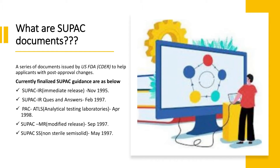These changes were categorized for different product types. The finalized SUPAC guidelines came in different formats: first was SUPAC IR, where IR stands for immediate release — meaning the product releases the drug immediately. Then SUPAC IR questions and answers and PAC-ATLS were also released. Then SUPAC MR, where MR stands for modified release, approved in September 1997. Then SUPAC SS, where SS stands for semi-solids — for non-sterile semi-solid dosage forms, guidelines in place since May 1997.